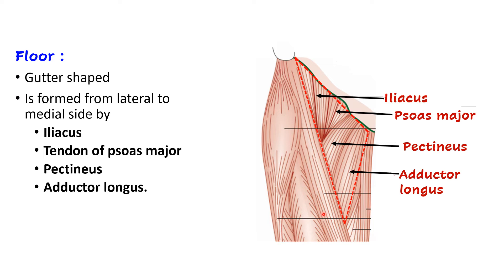The floor of the femoral triangle is gutter-shaped, slightly slanting towards the middle part. It is formed by four muscles from lateral to medial: iliacus, psoas major, pectineus, and adductor longus. A way to remember: adductor longus forms the medial boundary so it must be the most medial muscle on the floor. Iliacus takes origin from the iliac fossa so it is most laterally placed, always accompanied by psoas major, and then pectineus follows.